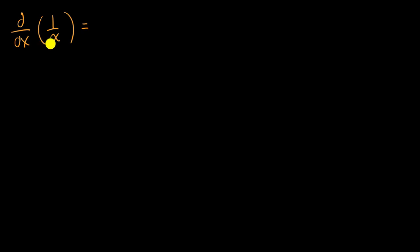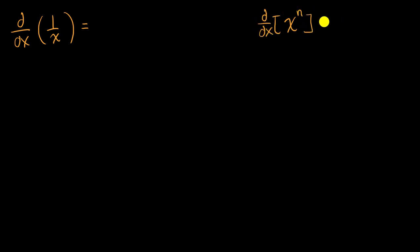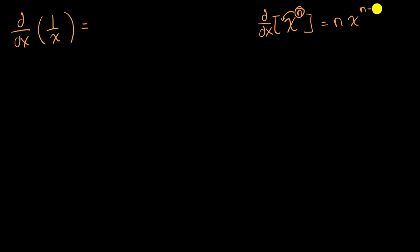At first you might say, how does the power rule apply here? The power rule, just to remind ourselves, tells us that if we're taking the derivative of x to the n with respect to x, that's going to be equal to — we take the exponent, bring it out front — n times x to the n minus one, decrementing the exponent.